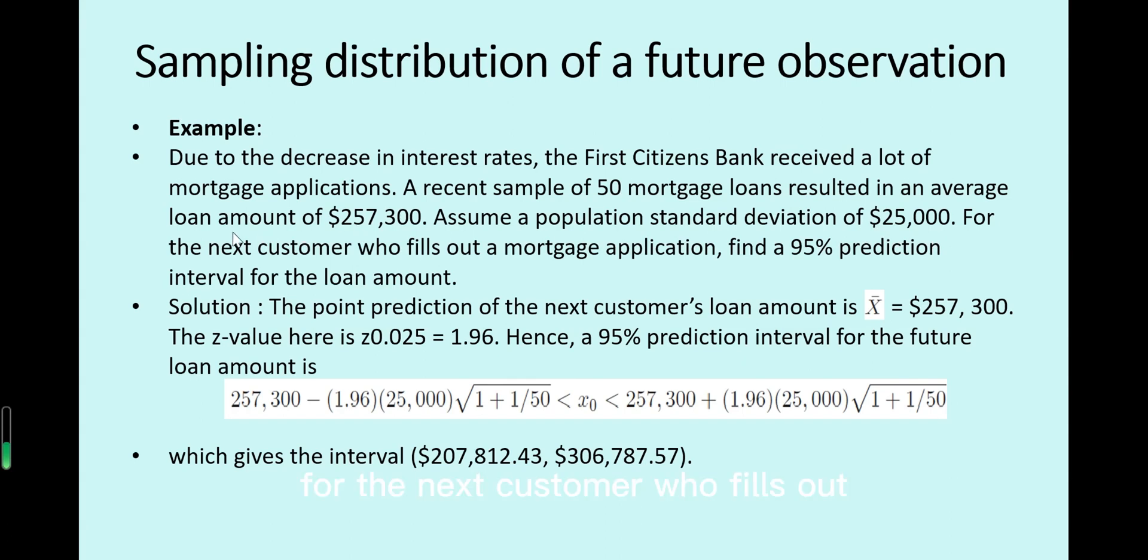For the next customer who fills out a mortgage application, find a 95% prediction interval for loan amount.